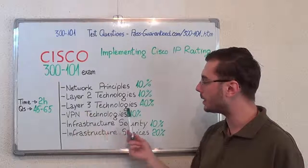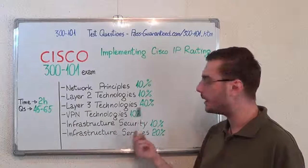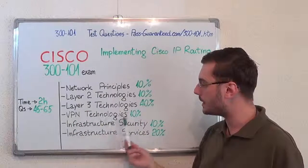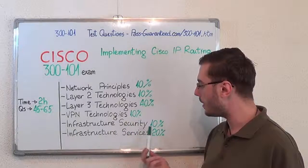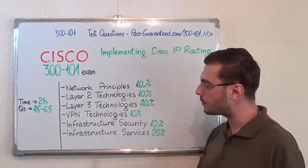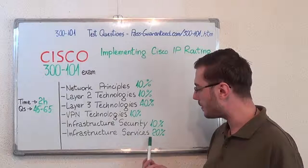After that, layer 3 technologies with 40%. Next, VPN technologies with 10%. After that, infrastructure security, also with 10%. And the last one, infrastructure services with 20%.